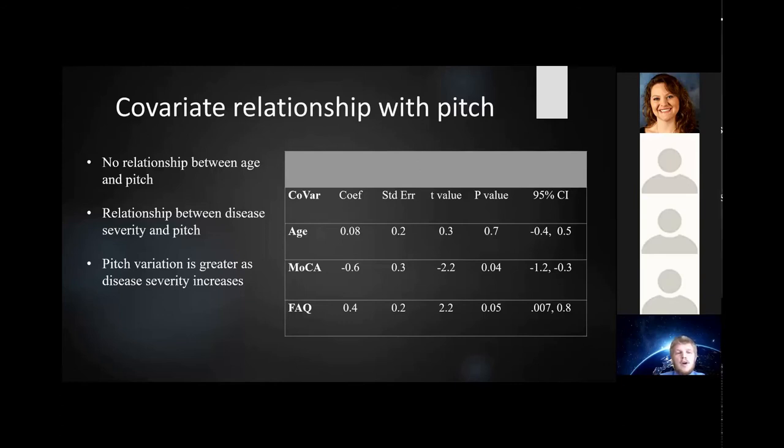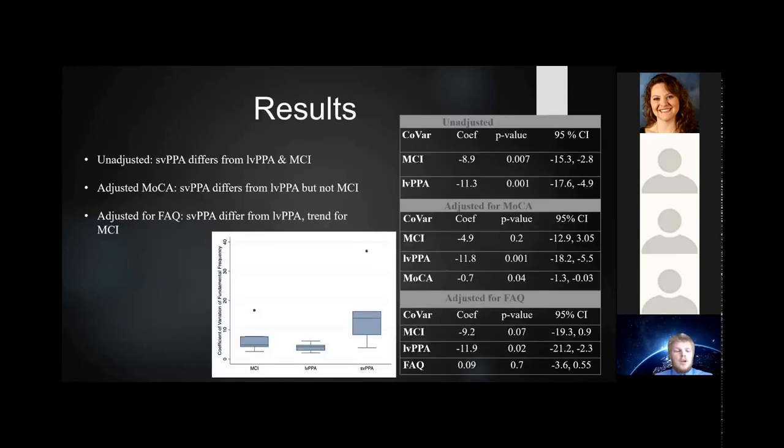This is different from what is commonly observed in Alzheimer's disease where greater severity is associated with less variation. We used the coefficient of variation to compare pitch variation and found that semantic patients displayed greater variation than logopenic patients and those compared to MCI. Even after adjusting for MOCA and FAQ, the semantics still differed from the logopenics. However, they did not differ from the MCIs.